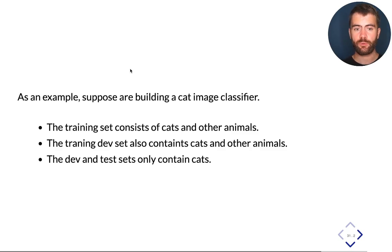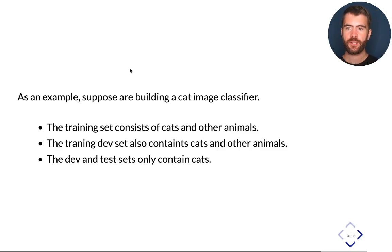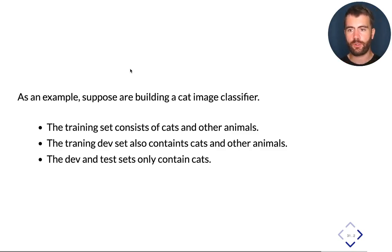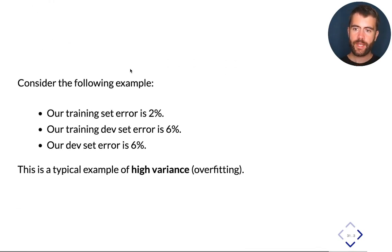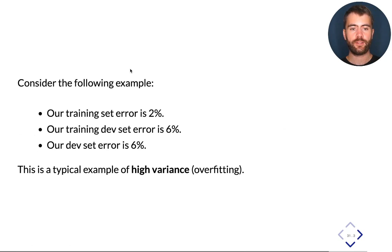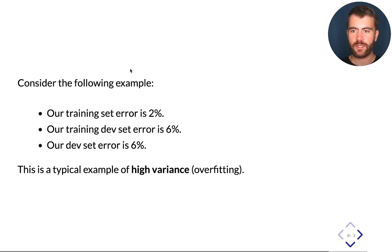Our training-dev set is sampled from the training set and therefore also contains cats and other animals, while the dev and test sets contain only cats, because ultimately we are graded on our performance on cats only. Now if we see an error pattern where we have a training set error of 2% and both a training-dev and standard development set error of 6%, this is a problem of high variance.